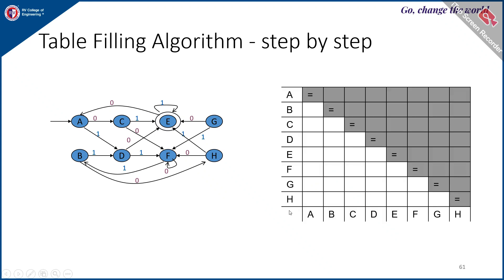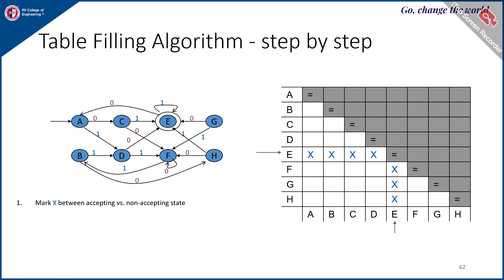Initially, prepare a table with states A through G on one axis. The rows will be from B to H and the columns from A to G. Then, since E is the final state, mark a cross between any one final state and one non-final state, indicating they are not equivalent.